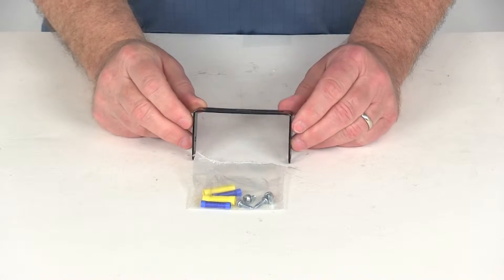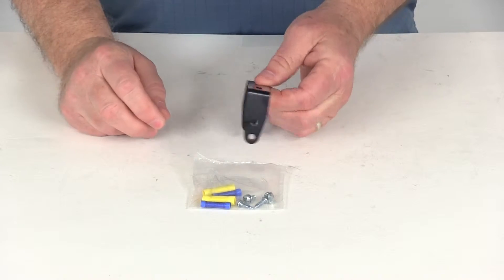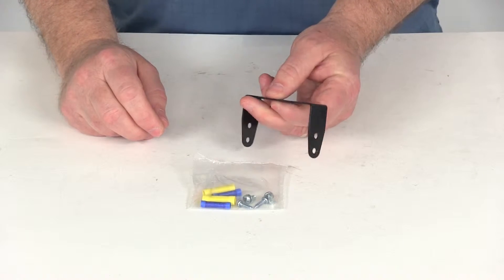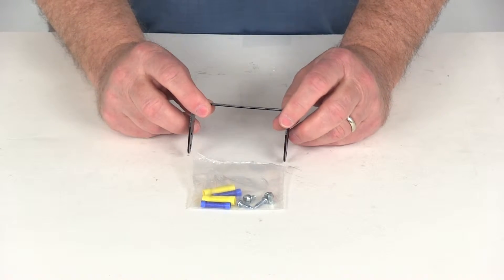Today we're going to review part number P7685. This is the Tekonsha replacement mounting bracket for the Tekonsha Prodigy brake controllers.